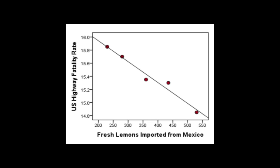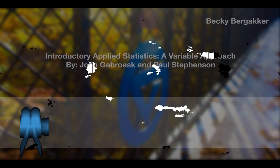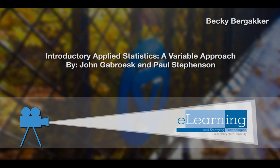So be careful when you're thinking about correlation versus causation — sometimes those two things are not the same. Causation is not implied simply because of a higher or stronger correlation between two variables.